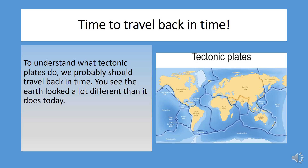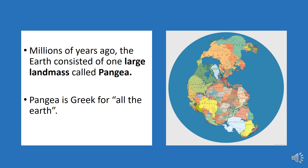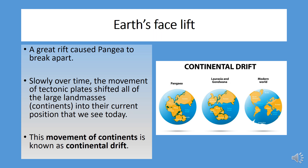To understand what tectonic plates do, we should travel back in time. The Earth looked a lot different than it does today. Millions of years ago, the Earth consisted of one large landmass called Pangaea. At some point in time, there was a great rift that caused Pangaea to break apart. Slowly over time, the movement of tectonic plates shifted all of the large landmasses — known as continents — into their current position. This movement of continents is known as continental drift.